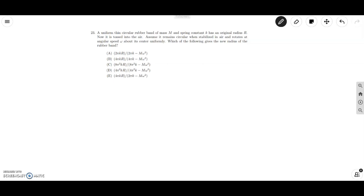The problem reads: a uniform thin circular rubber band of mass m and a spring constant of k has original radius r. Now it is tossed in the air. Assume it remains circular when stabilizing in the air and rotates at an angular speed omega about its center uniformly, which of the following gives the new radius of the rubber band.